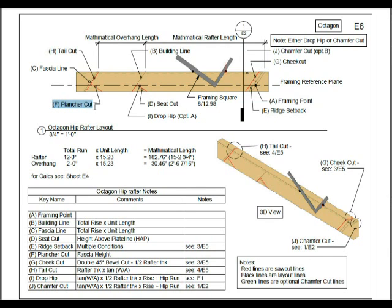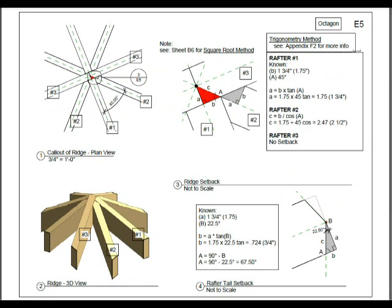Next is the plumb cut — we've talked about this before. That's just your fascia height; it's whatever you want it to be. And your cheek cut: it's a double 45 degree bevel cut, half the rafter thickness. We've done this before, but this is just another way of looking at it.